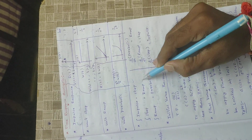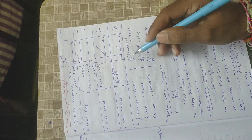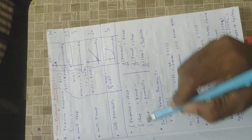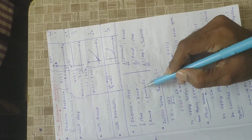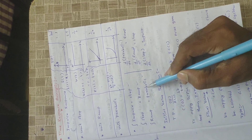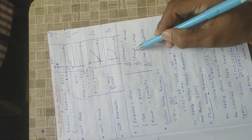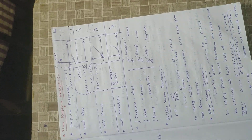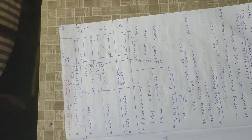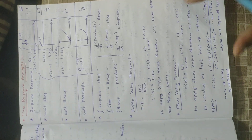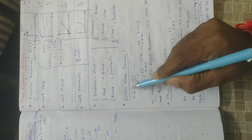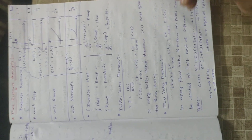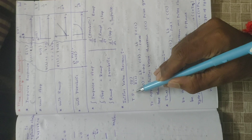Some important relationships: integration of impulse equals step; integration of step equals ramp; integration of ramp equals parabolic. Similarly, differentiation of parabolic equals ramp; differentiation of ramp equals step; differentiation of step equals impulse.